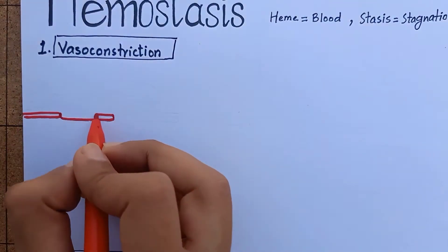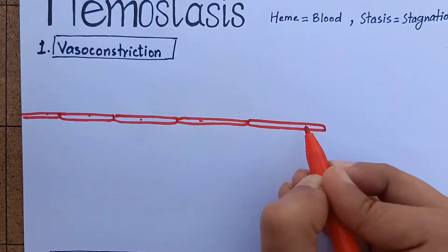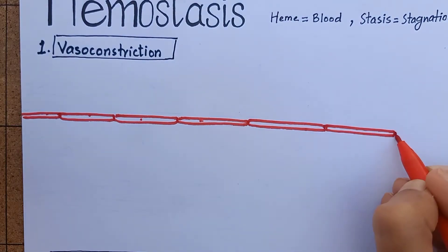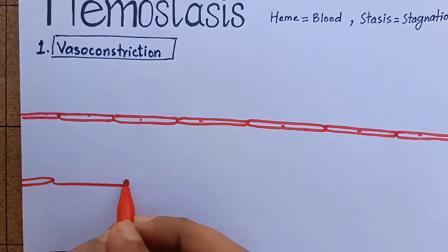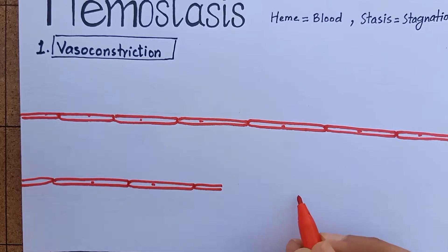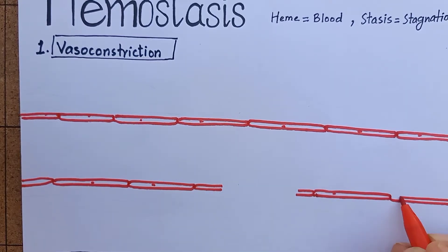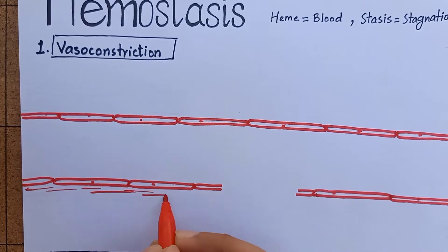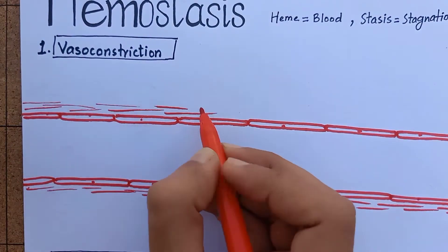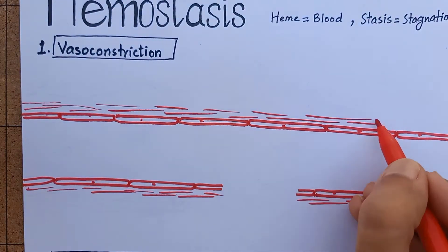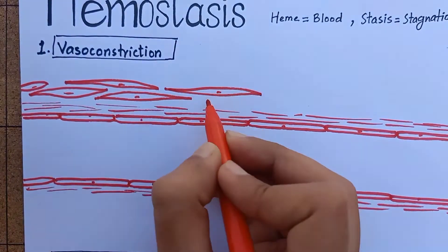Let's assume that you had a fall and injured yourself. The injury has caused a tear in a blood vessel. If we look into the blood vessel, it is made up of an innermost layer of endothelial cells. Surrounding the endothelial cells is extracellular matrix containing collagen. Outside the collagen is a layer of smooth muscle cells.